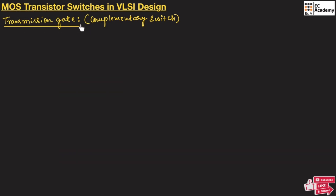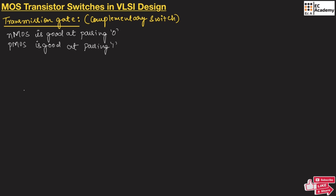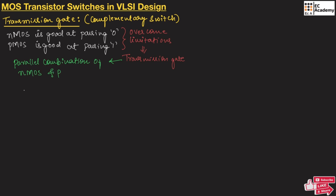Now let us understand the transmission gate, which is also known as a complementary switch. We understood that NMOS is good at passing logic 0 and PMOS is good at passing logic 1. To overcome the individual limitations, we use the transmission gate, which is the parallel combination of NMOS and PMOS transistors controlled by two complementary signals.